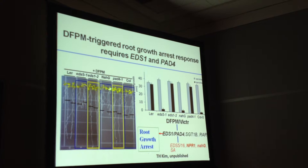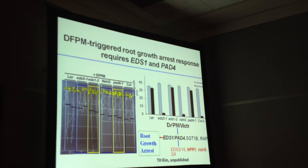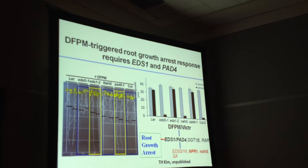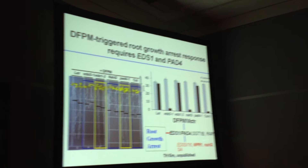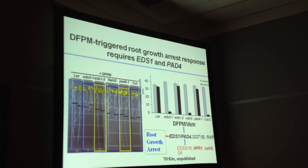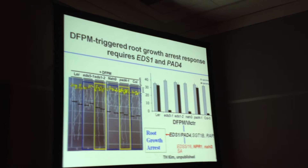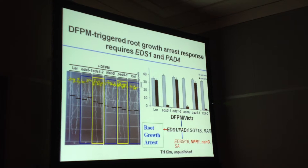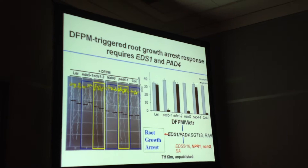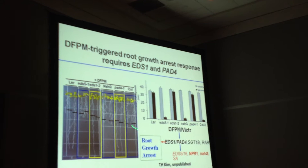This root growth readout is a very powerful assay for asking which genes are required for DFPM inhibition of root growth arrest. Victor is required, and again these early ETI mechanisms are required, but not downstream salicylic acid or jasmonic acid signaling. There's another crosstalk pathway with PAMP signaling that Xingyang He and colleagues characterized — a different mechanism based on genetics. In a PAD4 mutant, DFPM does not inhibit root growth, while in a salicylic acid signaling mutant it does.